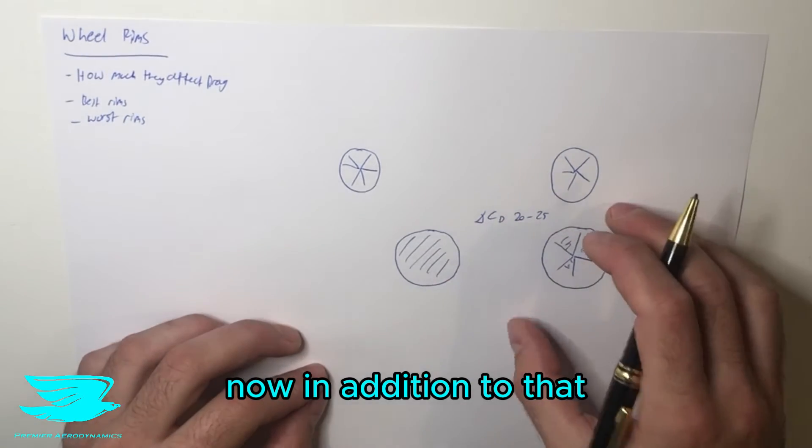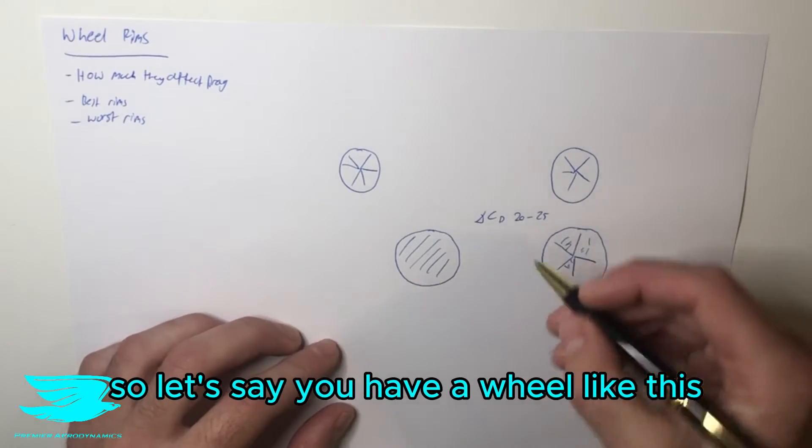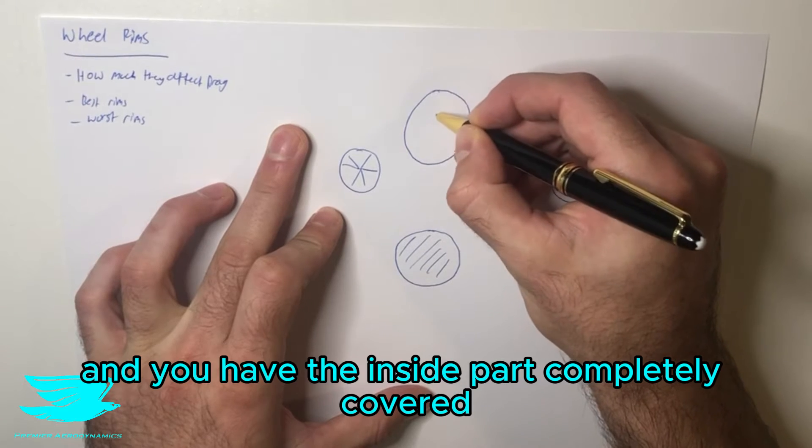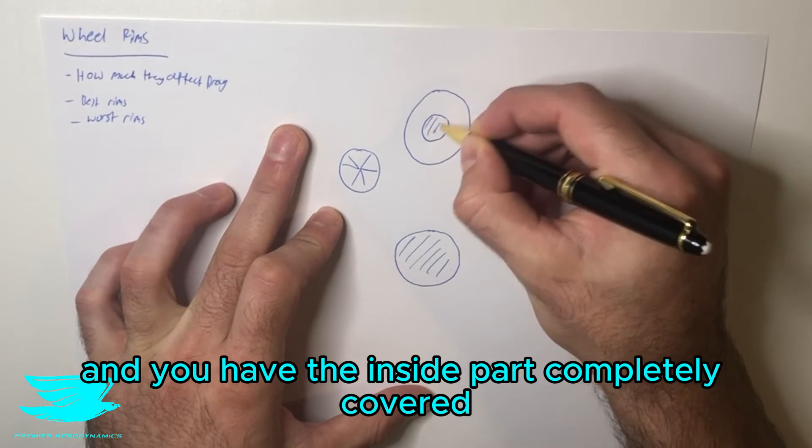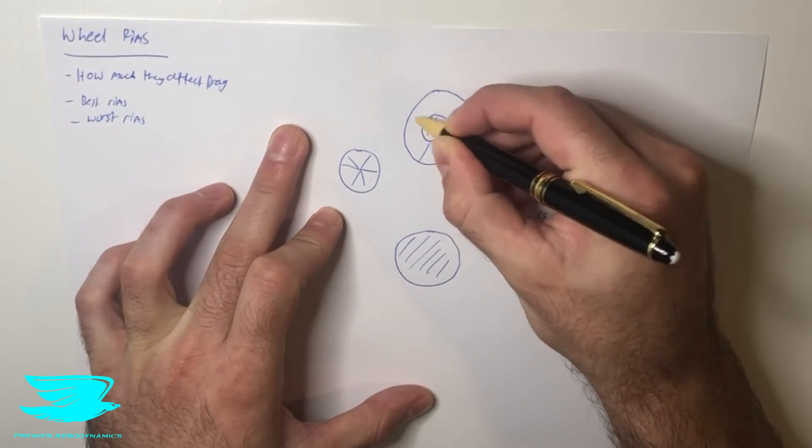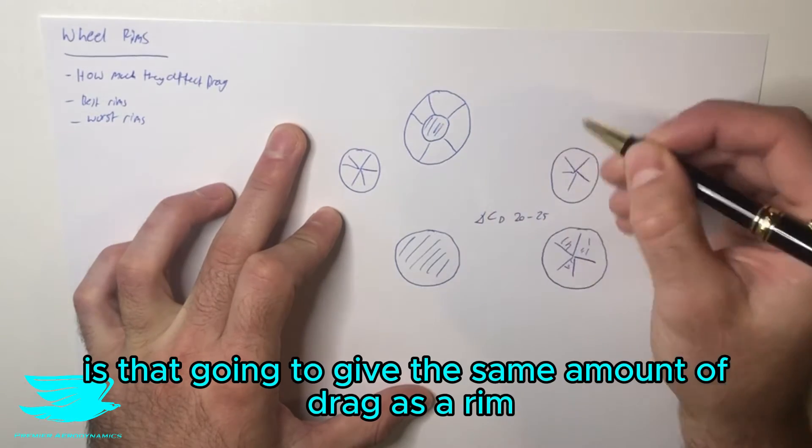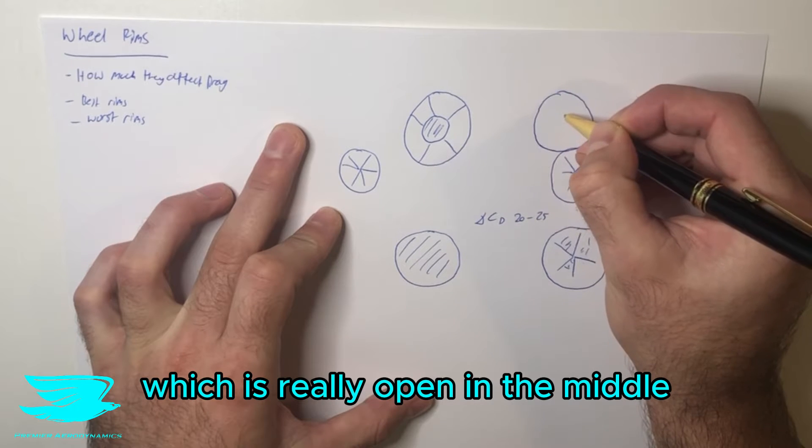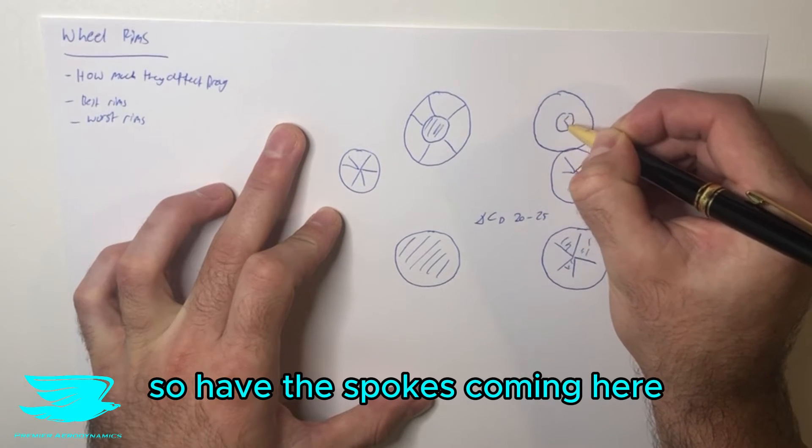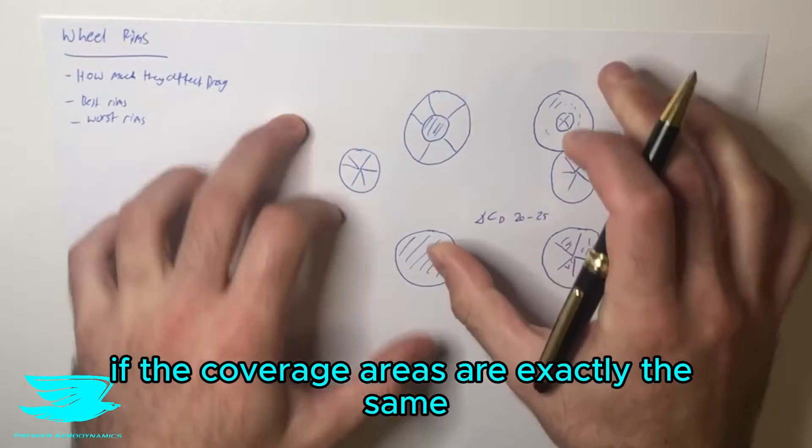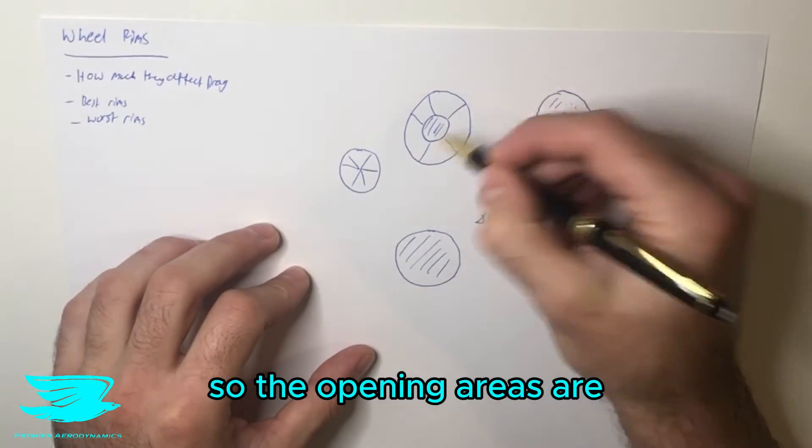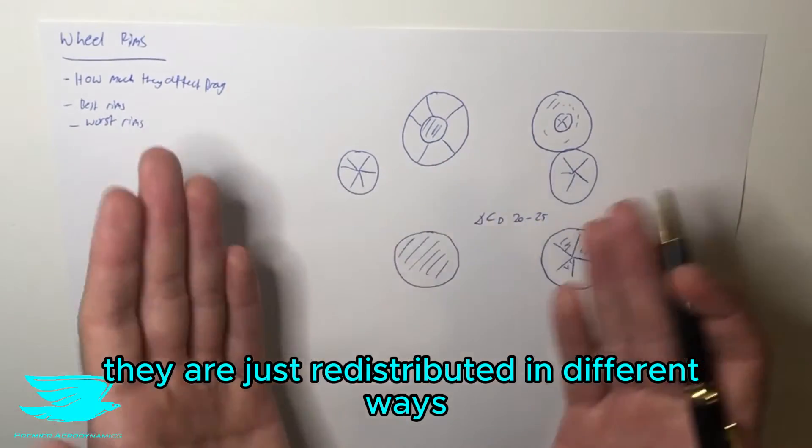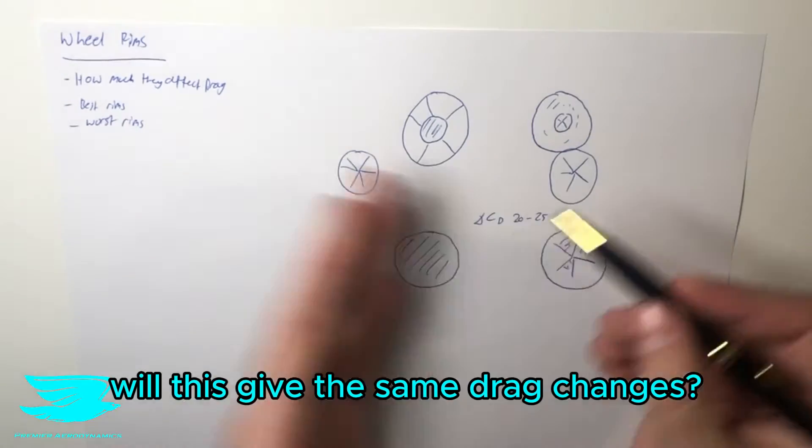Now in addition to that, it also depends on where you put the openings. So let's say you have a wheel where the inside part is completely covered, then you have the spokes coming out, and the outside part is completely open. Is that going to give the same amount of drag as a rim which is completely open in the middle with spokes here, and then completely closed on the outside, if the coverage areas are exactly the same? They're just redistributed in different ways.